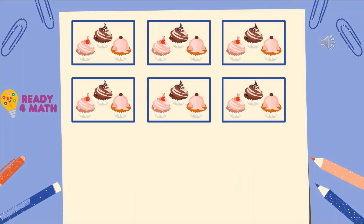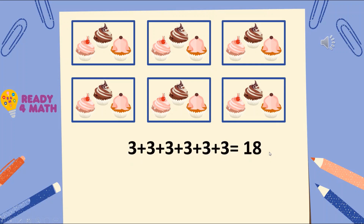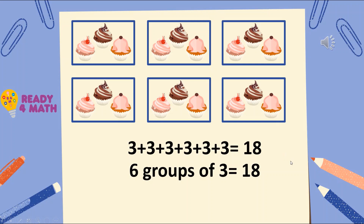Using skip counting once again, let's find out how many cupcakes there are in this picture. Ready? 3, 6, 9, 12, 15, 18, 21, 24, 27, 36. Aside from skip counting, we can also do repeated addition. We have 6 groups of 3, so we add 3 six times, giving us 18. We can also write the multiplication sentence: 6 times 3 is equal to 18.